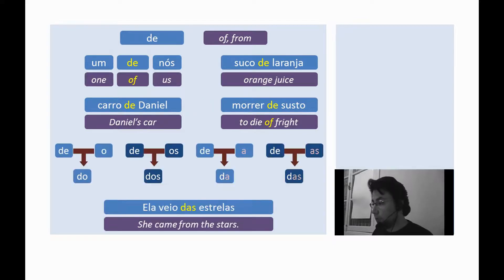The preposition de can be contracted with the articles o, os, a, as. So, we have do, dos, da, das. Example. Ela veio das estrelas. She came from the stars.